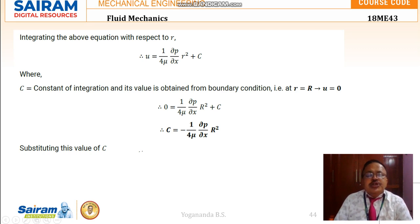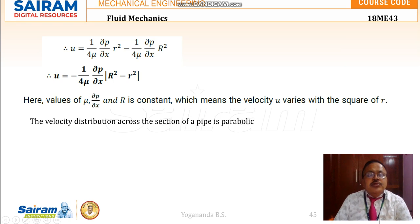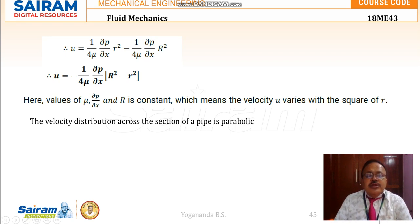Substituting u = 0 when r = R to find C, and substituting this value back into the velocity equation: u = (1 / 4mu) · (del P / del X) · (r² - R²). Since mu, del P / del X, and capital R are constants, velocity u varies with the square of r, meaning the velocity distribution across the pipe section is parabolic.